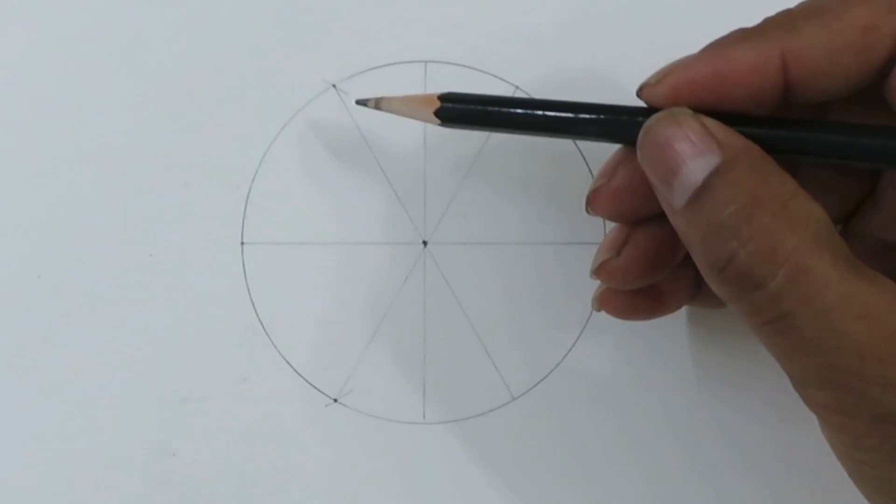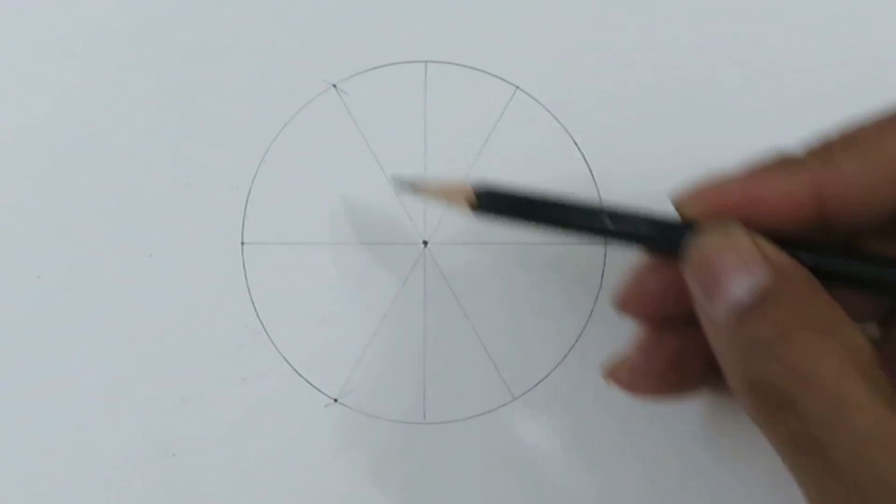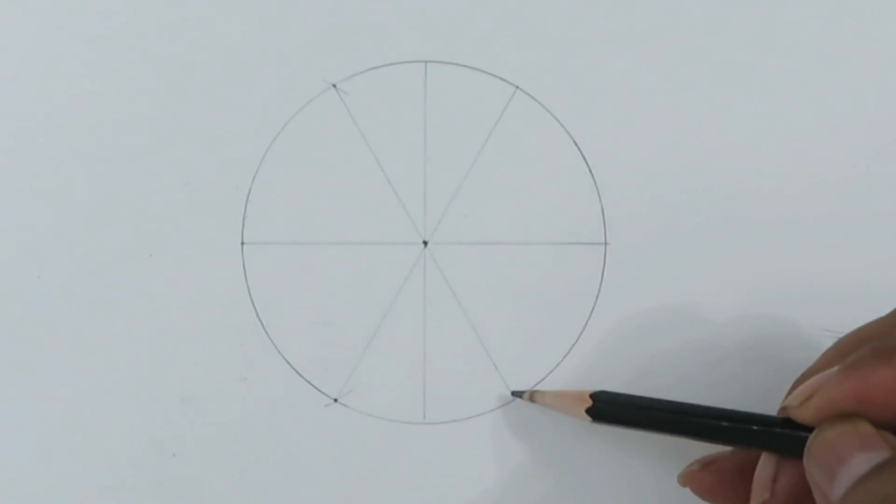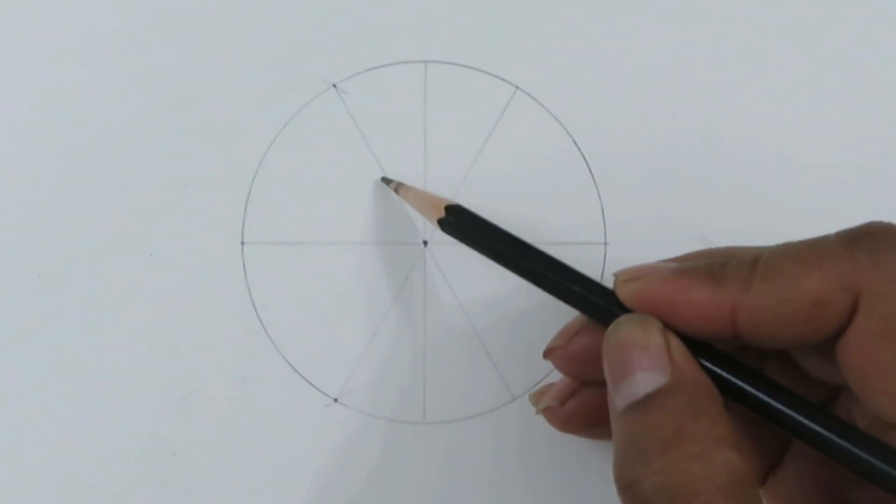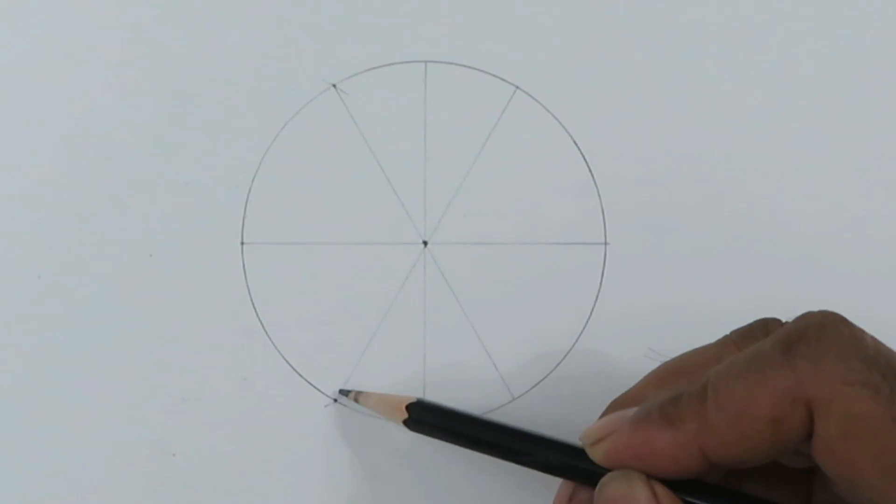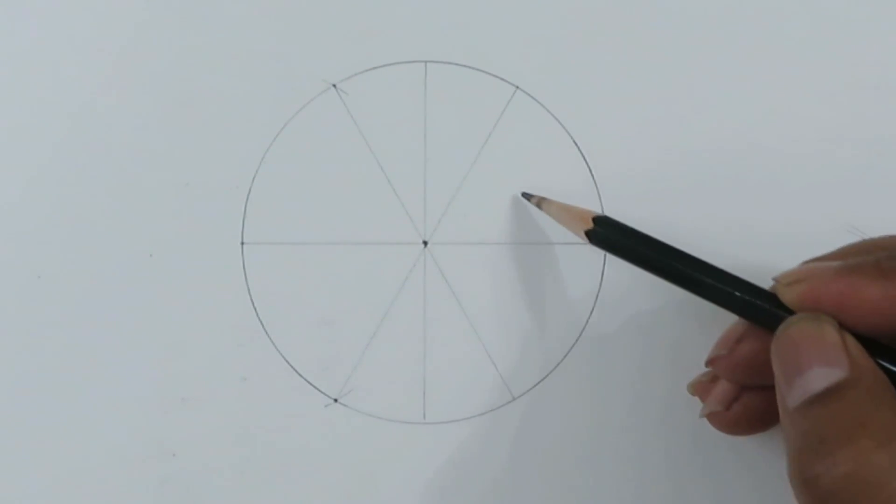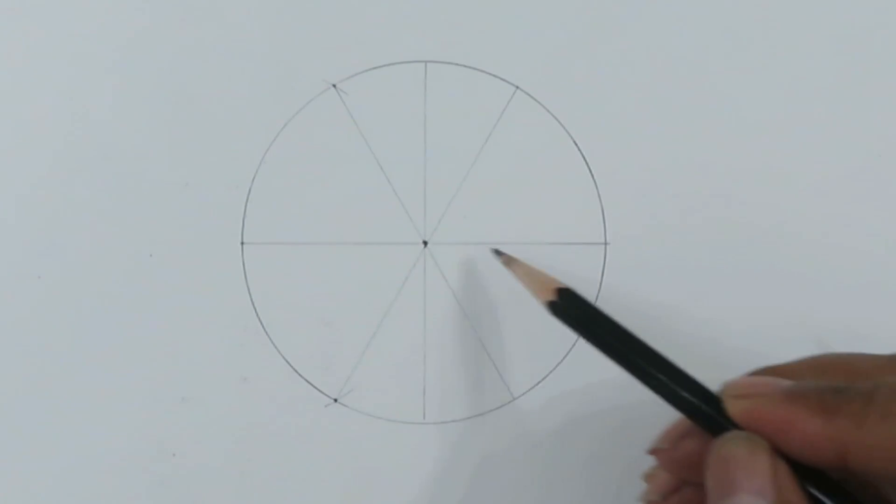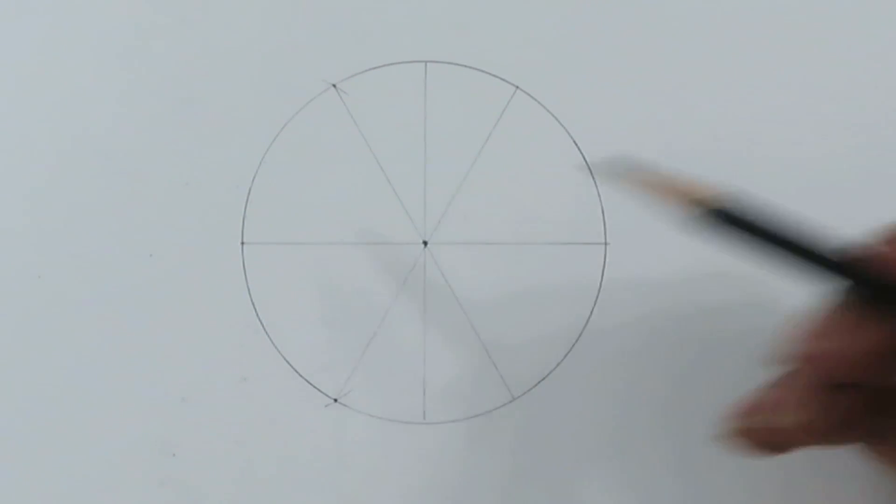Basically we have drawn two diameters, and this diameter for example is making an angle of 60 degrees with the horizontal diameter. Similarly, this diameter is making an angle of 60 degrees with the horizontal diameter.